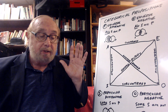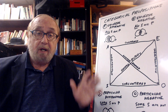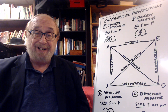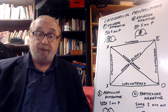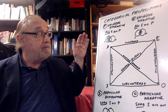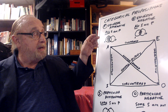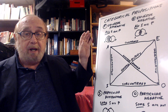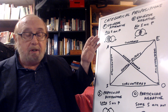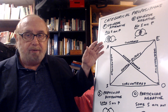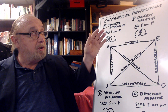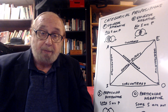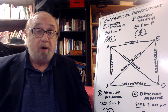As I said, historically, philosophers and logicians agree that there are four standard form categorical propositions. The universal affirmative, or all S are P — S stands for subject, P stands for predicate — all S are P, as in all dogs are mammals. Or the universal negative, no S are P, or no dogs are fish.